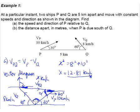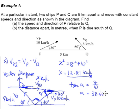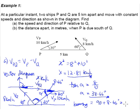Therefore, the required bearing equals 90 plus 8.66 degrees, which gives us 098.66 degrees. So this is our Part A answer for the velocity of P relative to Q — 12.81 kilometers per hour at a bearing of 098.66 degrees.